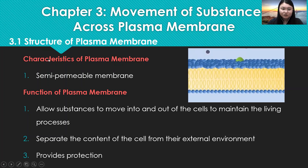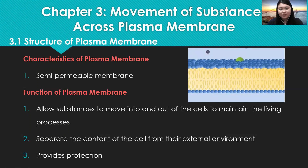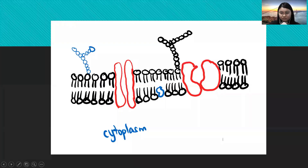First of all, let's look at the characteristics of plasma membrane. Plasma membrane is a semi-permeable membrane. The function of plasma membrane is to allow substances to move in and out of the cells to maintain the living process. Plasma membrane also can separate the content of the cell from their external environment, and also provides protection to the cell.